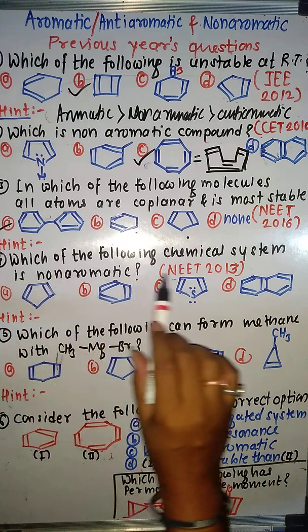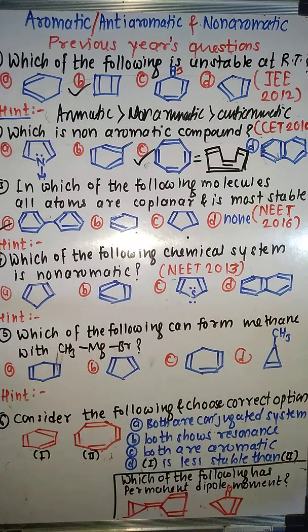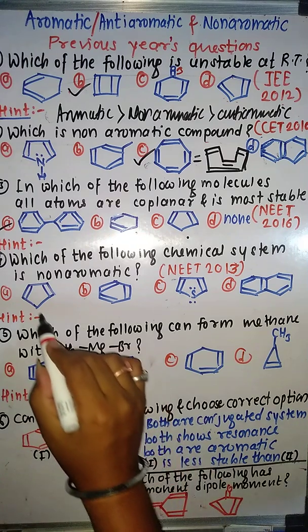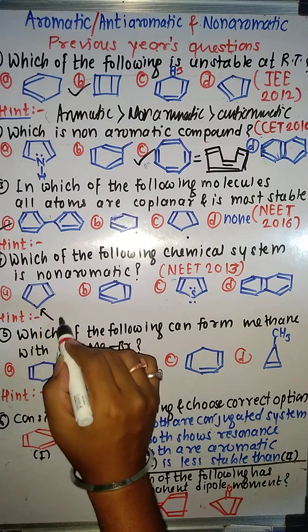From NET 2013: which of the following chemical system is non-aromatic? The condition for non-aromatic is that there is no planarity. In this case, for option A, consider the first carbon — the absence of planarity makes it non-aromatic.